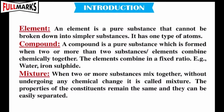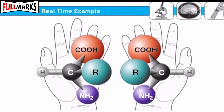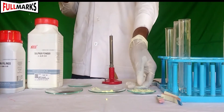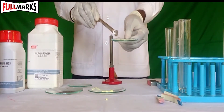This experiment is helpful to understand pure substances like elements, compounds, and homogeneous and heterogeneous mixtures. Apparatus required: test tube, test tube stand, holder, Bunsen burner, magnet, china dish, and a watch glass. Chemicals required: iron filings, sulfur powder, and carbon disulfide.